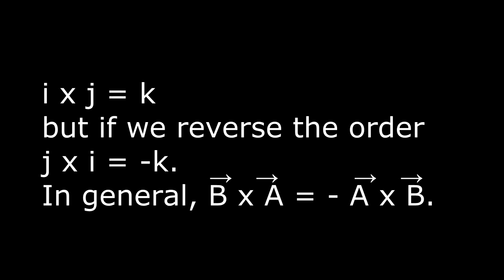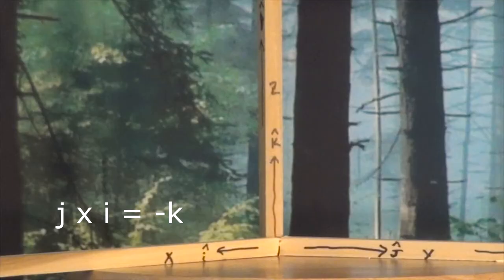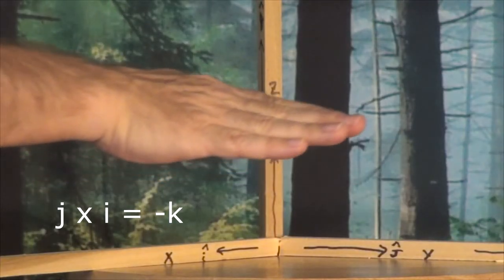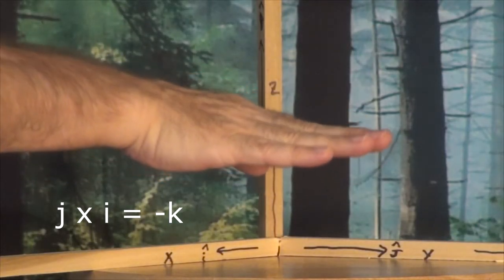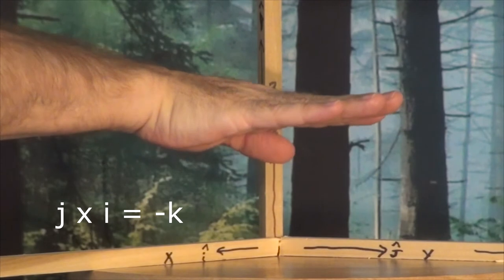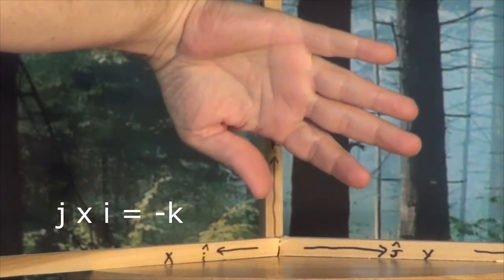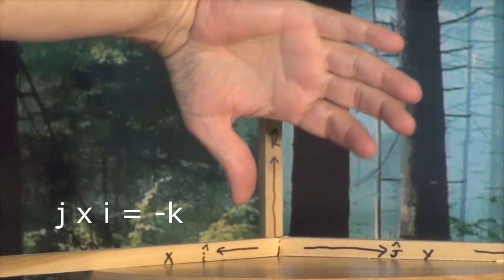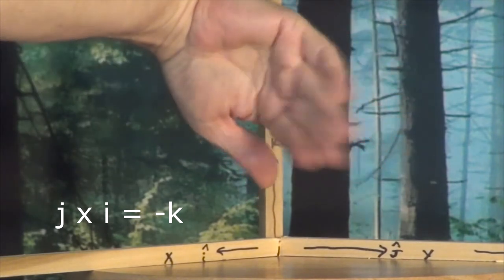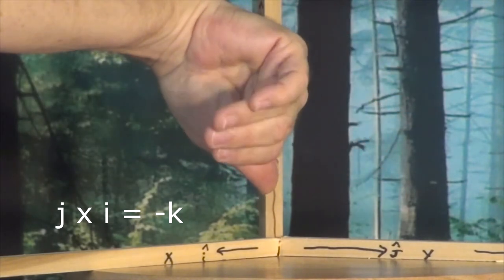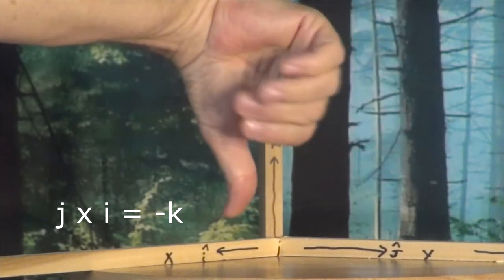In general, B cross A equals minus A cross B. To see this, put our fingers in the direction of J, orient your arms so that you are able to curl your fingers toward I, and our thumb points in the direction minus K.